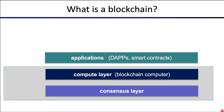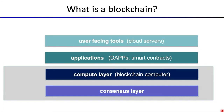The third layer is basically the applications themselves. These are sometimes called decentralized applications, or dApps, sometimes they're called smart contracts — these are basically the applications that we run on the blockchain. And finally, the fourth layer consists of user-facing tools, which is basically how the public actually interacts with these programs.